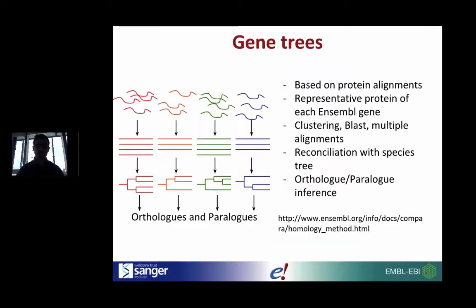Our gene trees are produced based on protein alignments. We take a single representative protein from each Ensembl gene, then perform clustering, blast the sequences, and perform multiple alignments. Finally, we reconcile these results to the known species tree produced by TreeBest. From this gene tree, we can also infer ortholog and paralog relationships.